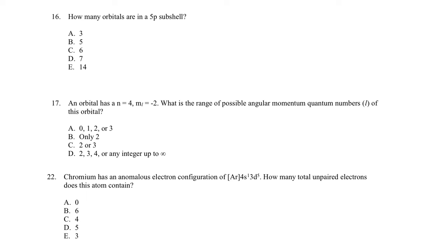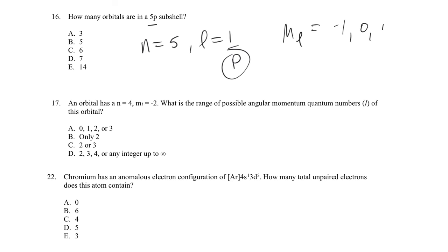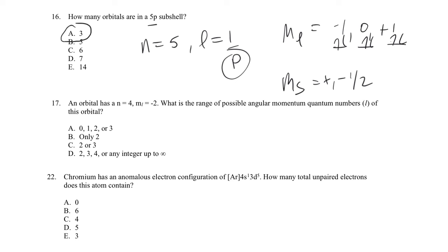Chapter 6 questions: how many orbitals are in a 5P subshell? The 5P subshell refers to n=5, l=1. With l=1, the possible m_l values are -1, 0, and +1 — that's three orbitals. Each orbital can have m_s of plus or minus one-half. So we can have six electrons total in the subshell distributed across those three orbitals. Any P subshell, including 5P, has three orbitals.